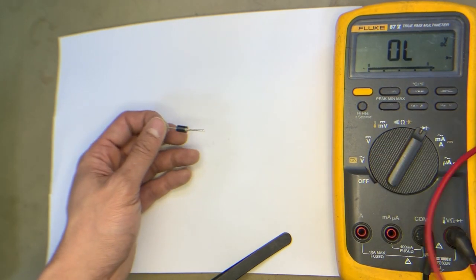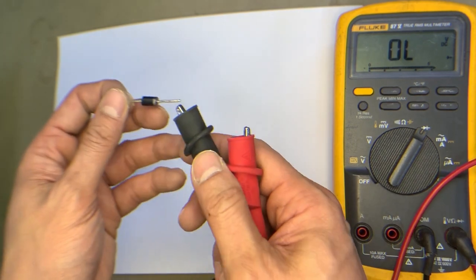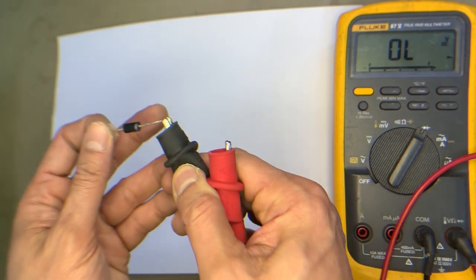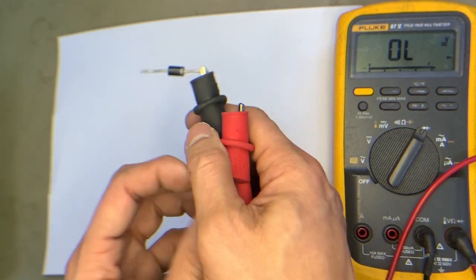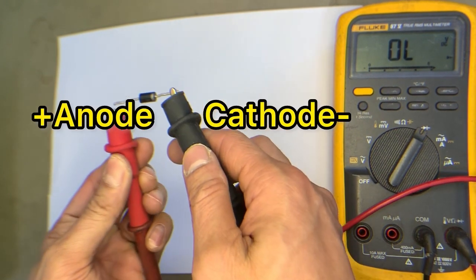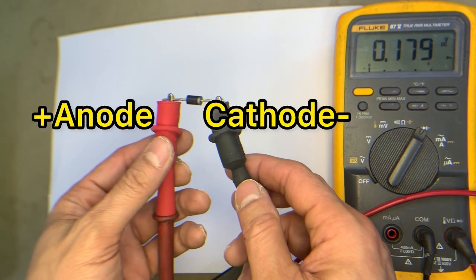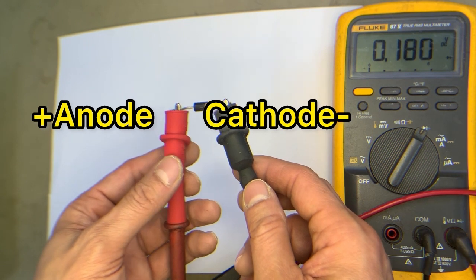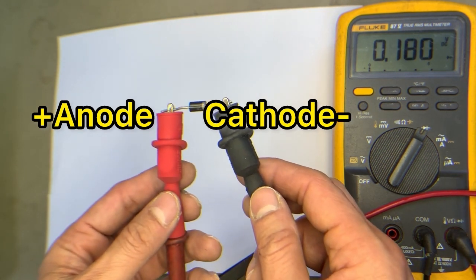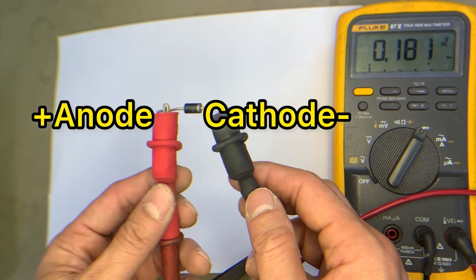Then black probe to the cathode and red probe connected to the anode. There should be a reading - 0.180 VDC. If it is inversely connected, there is no reading.